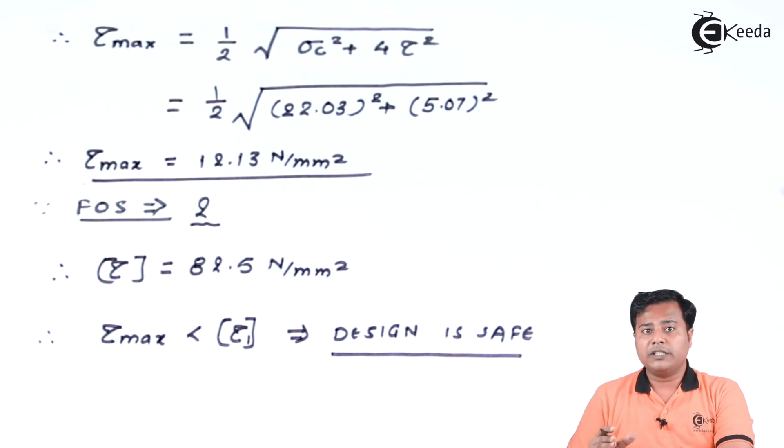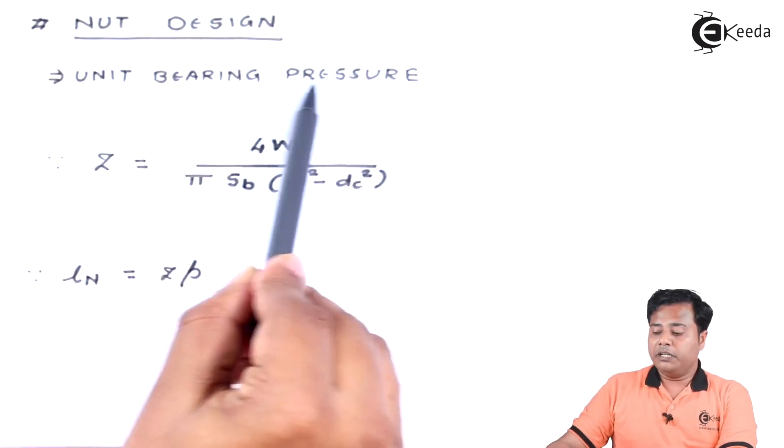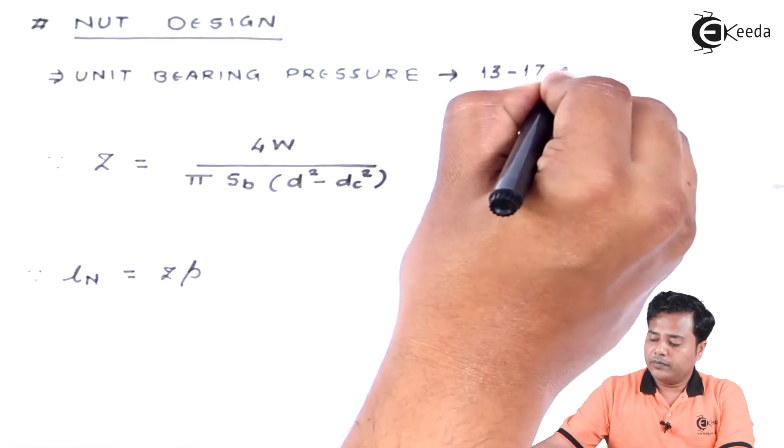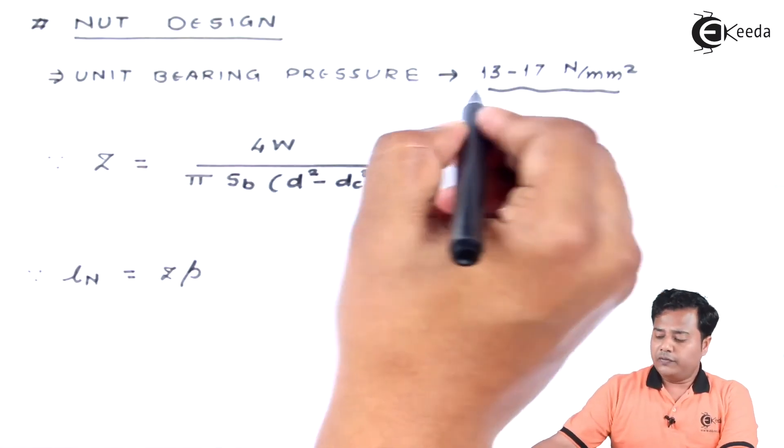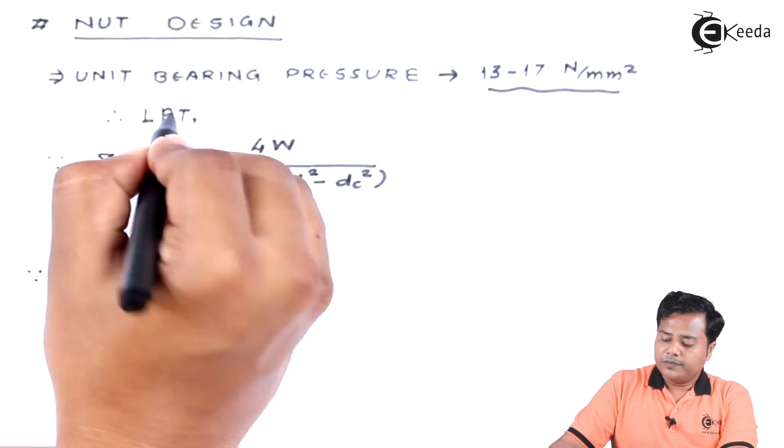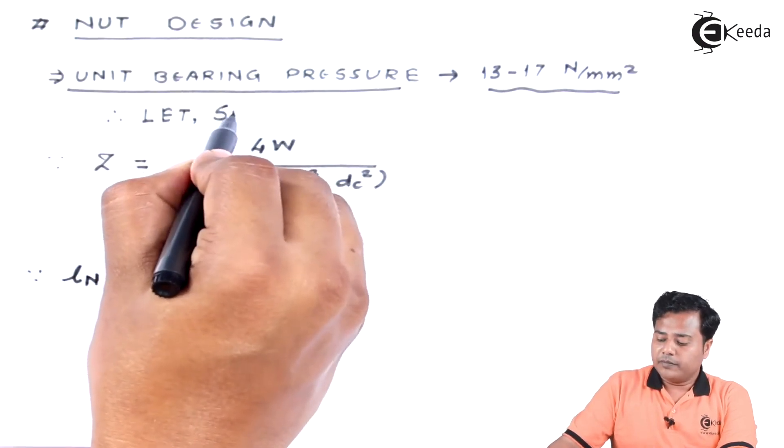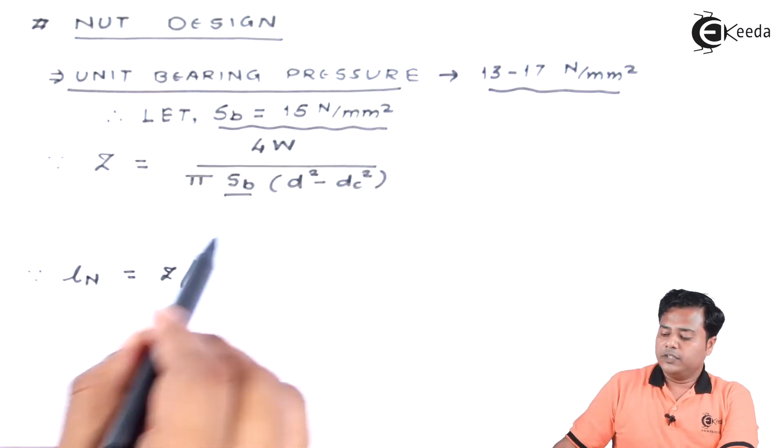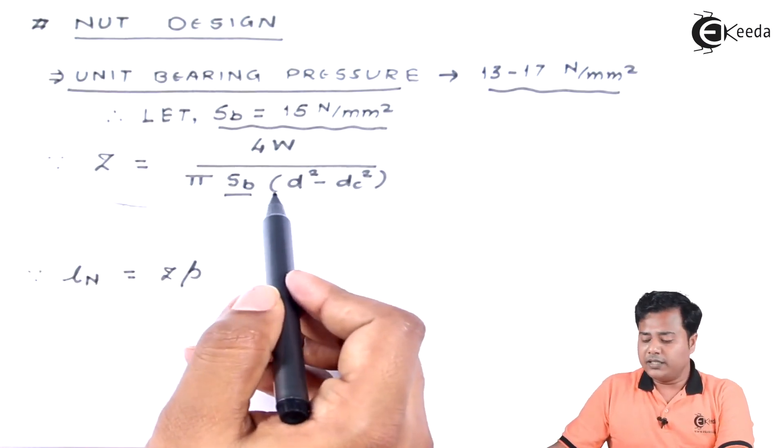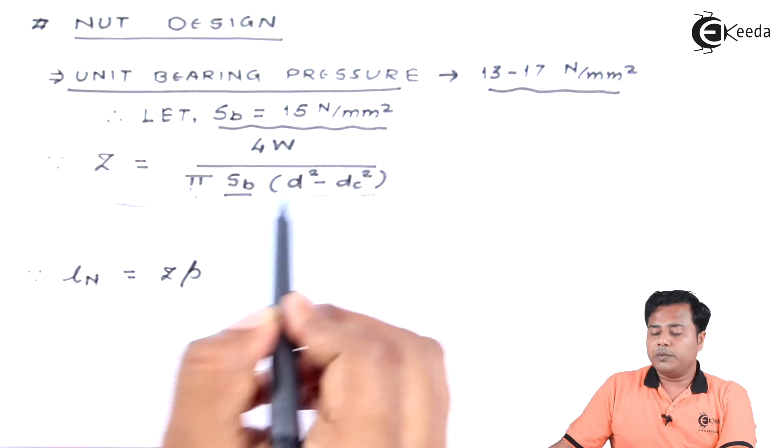In the next part we are going to do the design for the nut. So let us begin with the nut design. Now this is an important factor they have given: unit bearing pressure. The range is also given. This is basically for the given material combination, which is plain carbon steel and gray cast iron. Let us go for the average value of it, and therefore let SB be the mean, which is going to be 15 newton per millimeter square.